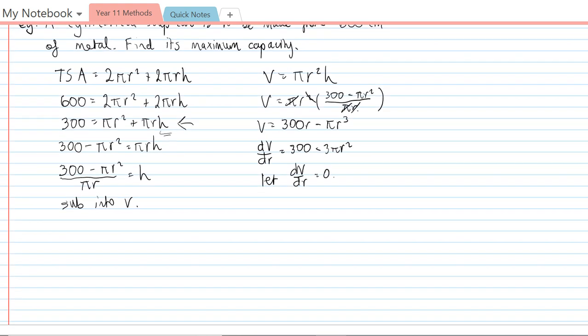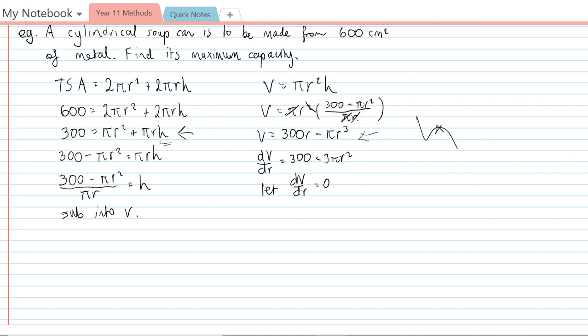Again, this is going to be a volume equation, that's a negative cubic. So the shape of it is going to be something like that. So we're looking for this maximum here. And if I have 0 = 300 - 3πr², I can then rearrange that to solve. So I'll add 3πr² on both sides.